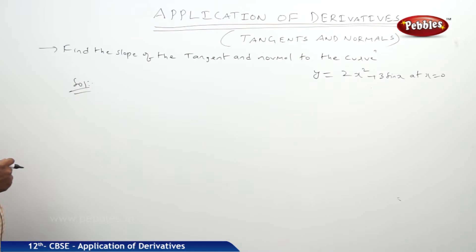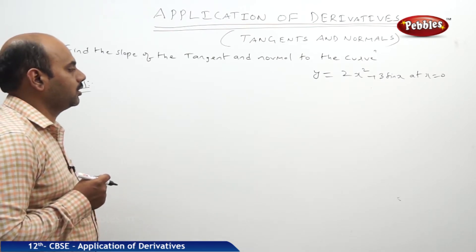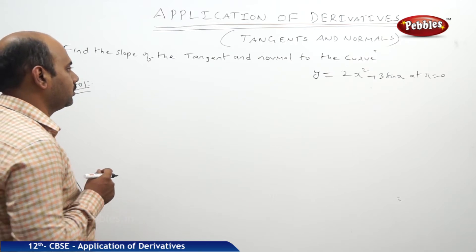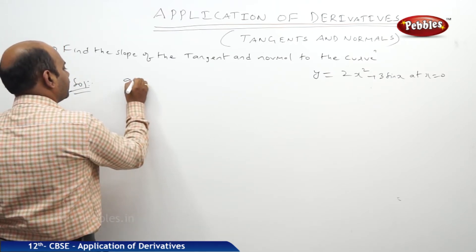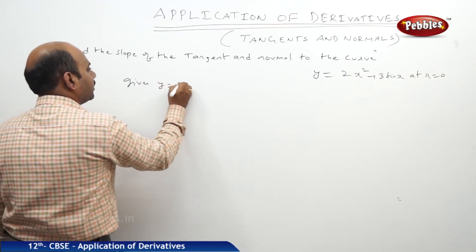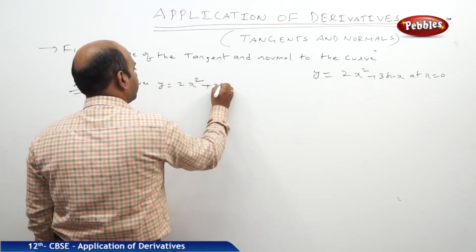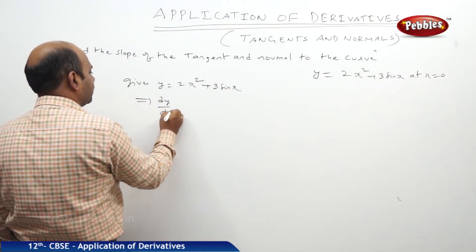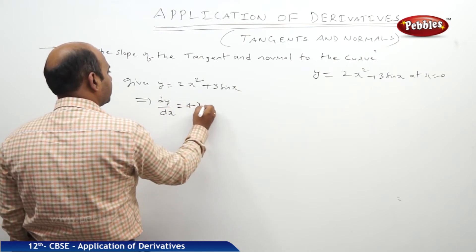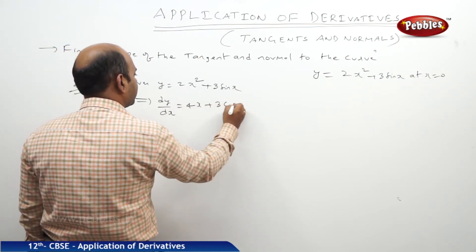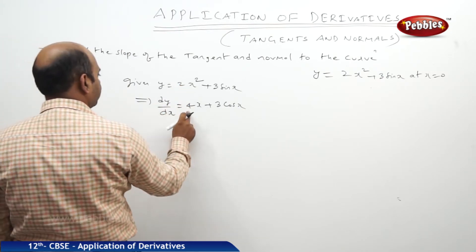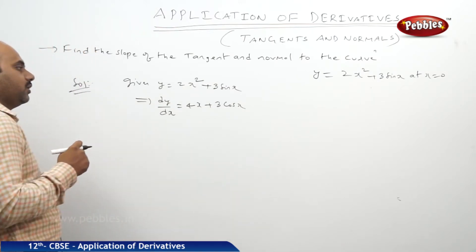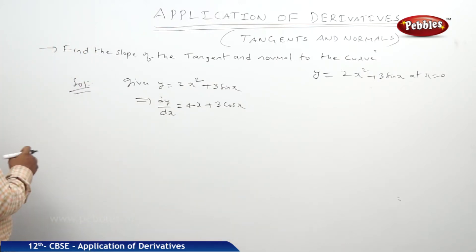Another problem: Find the slope of the tangent and normal to the curve y = 2x² + 3 sin x at x = 0. Given y = 2x² + 3 sin x, differentiating with respect to x gives dy/dx = 4x + 3 cos x, since the derivative of x² is 2x (times 2 gives 4x), and the derivative of sin x is cos x.